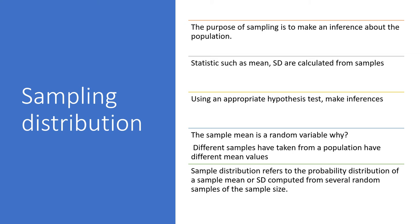The sample mean is a random variable. Different samples taken from the population have different mean values. Sampling distribution refers to the probability distribution of a sample mean or standard deviation computed from several random samples of the same sample size. So sampling distribution is the concept that describes how sample statistics vary across multiple samples.